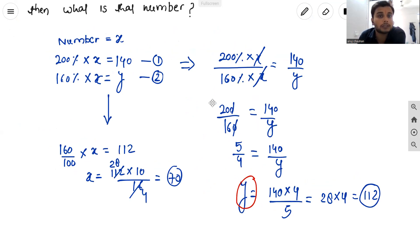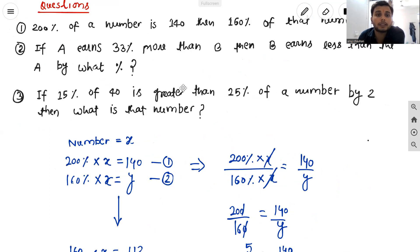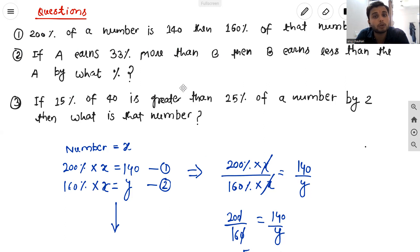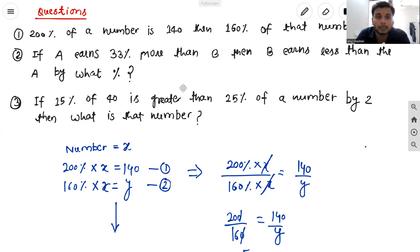Question number two: if A earns 33 percent more than B, then B earns less than A by what percent? Questions like this may be confusing. Some people may say that if A is earning 33 percent more than B, then B will earn 33 percent less than A — but it is not like that.